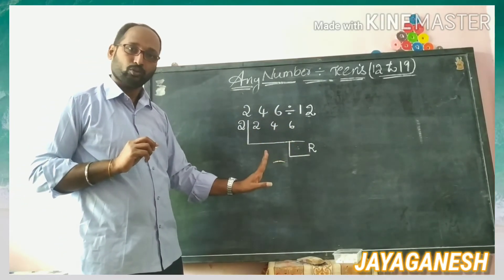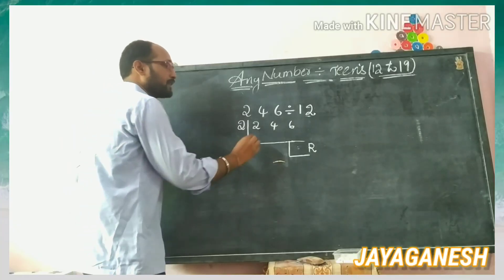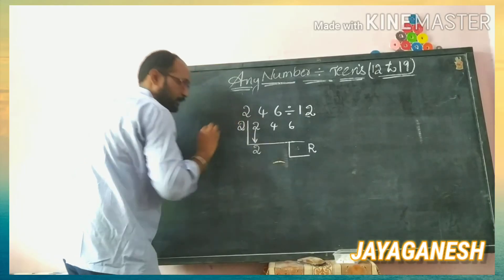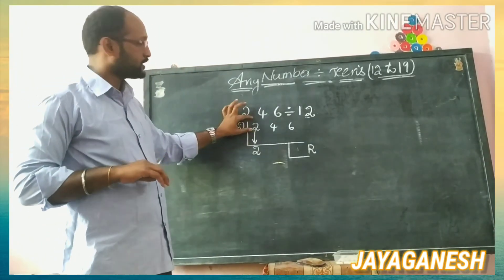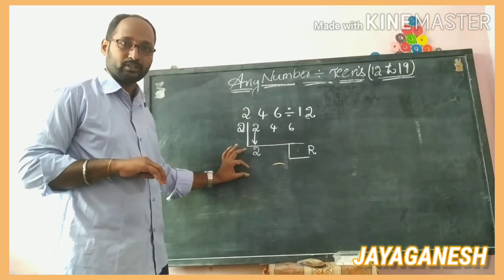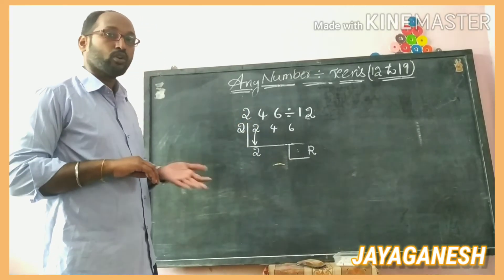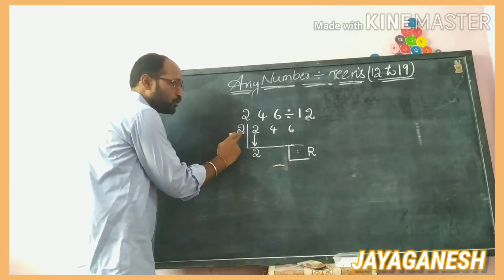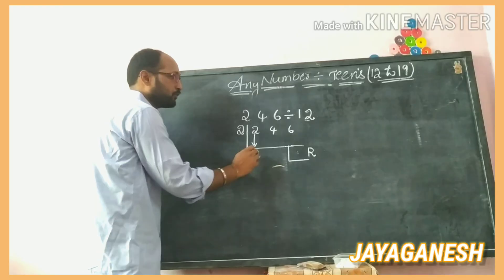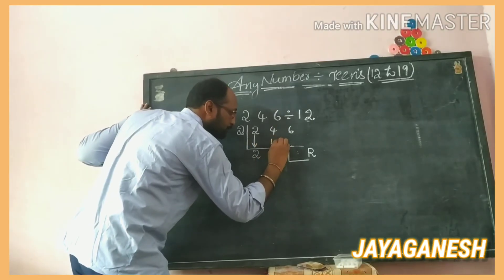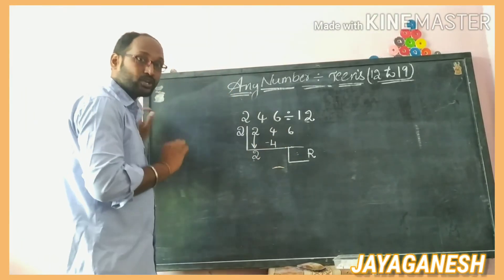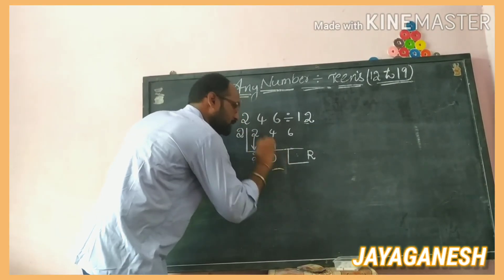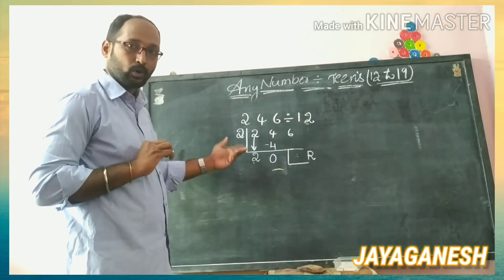The first step: drop the first digit as it is. I drop the 2. Now, from the divisor, multiply: 2 times 2 equals 4. Write that 4 down as the next number and do subtraction: 4 minus 4 is 0.